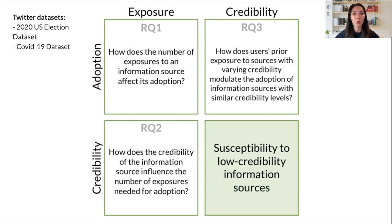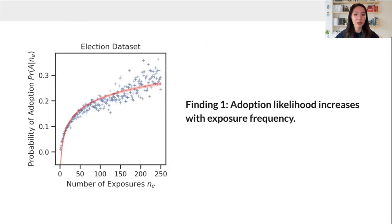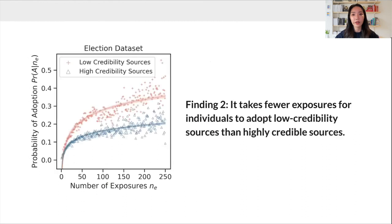It turns out, the more we're exposed to an information source, the more likely we are to adopt it. Repeated exposure significantly increases our susceptibility to a source of information. Moreover, individuals are quicker to adopt information from low-credibility sources than from high-credibility ones. This reveals a greater vulnerability to misinformation.